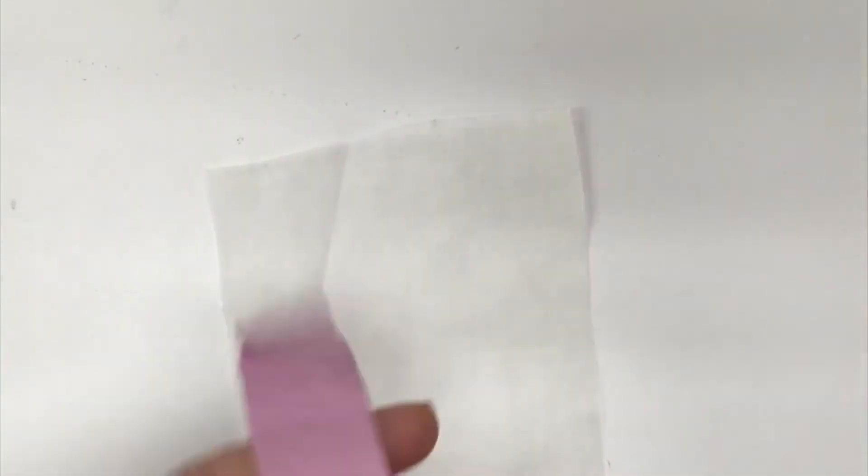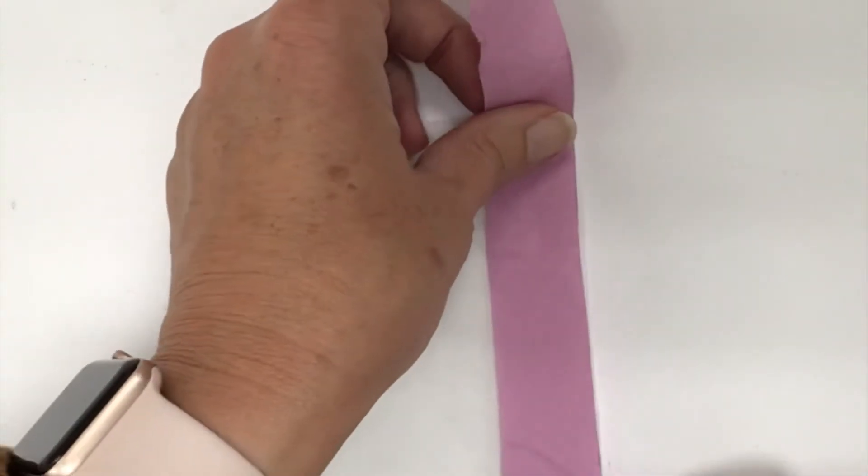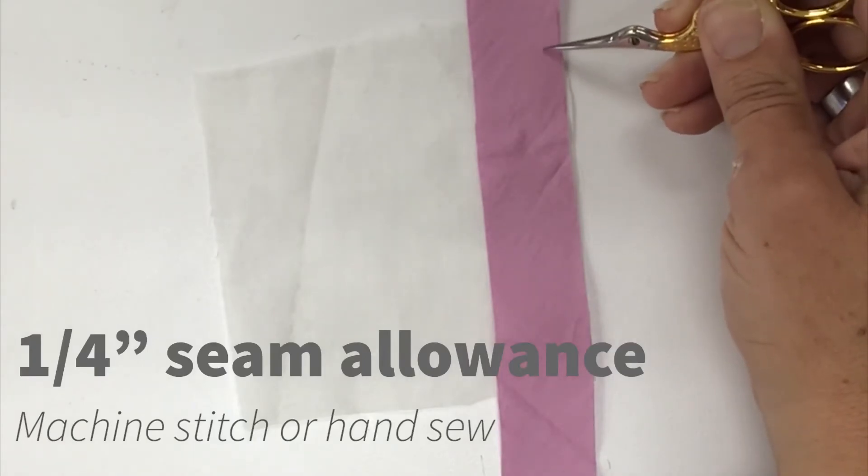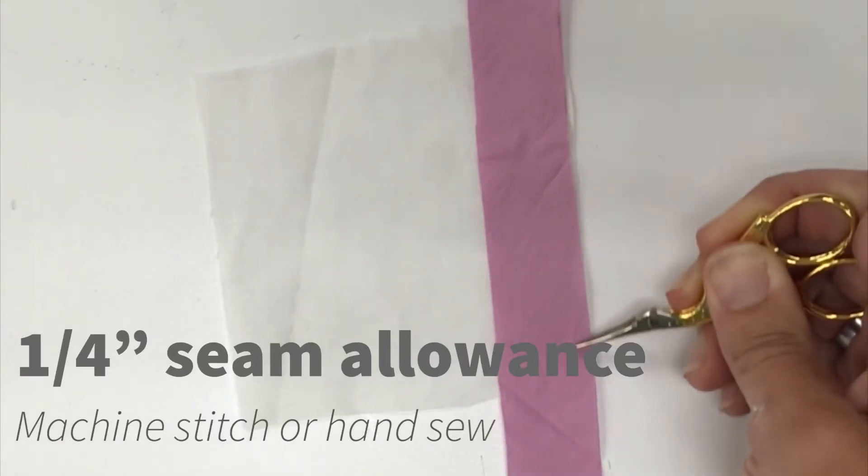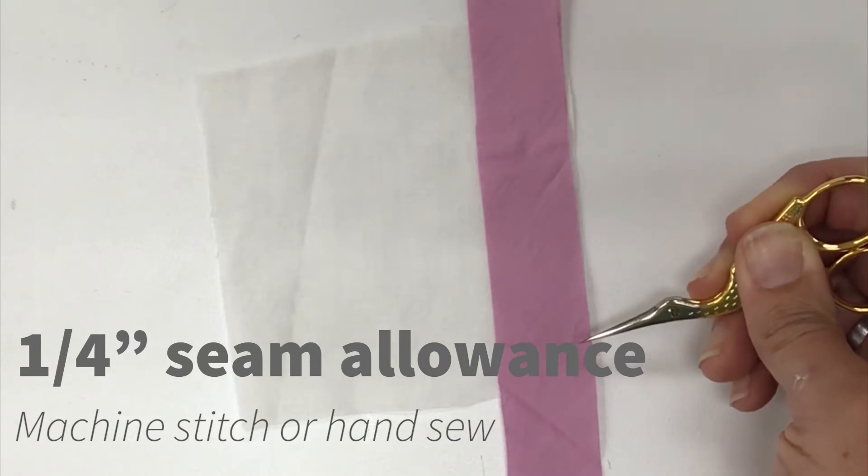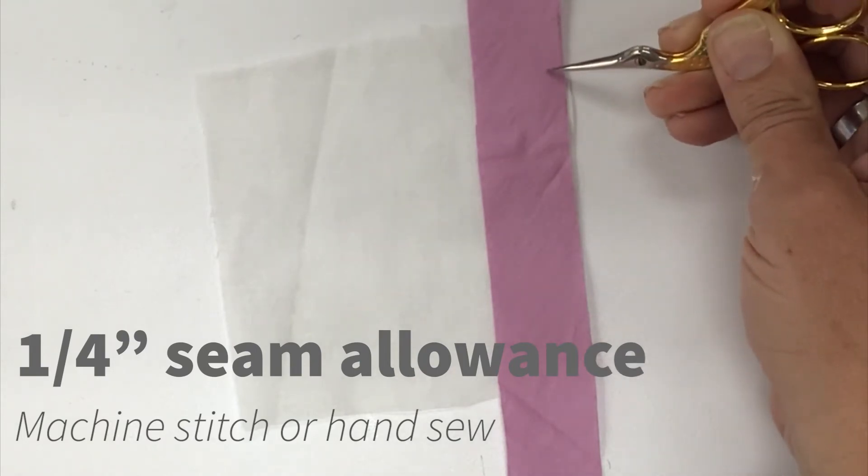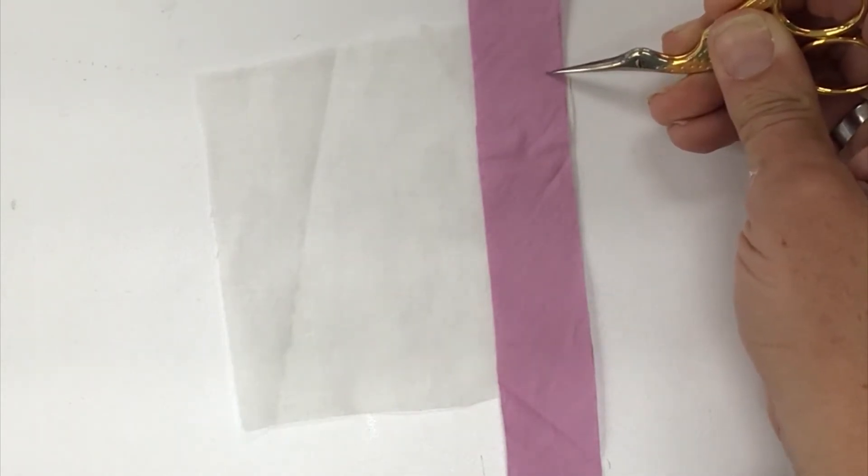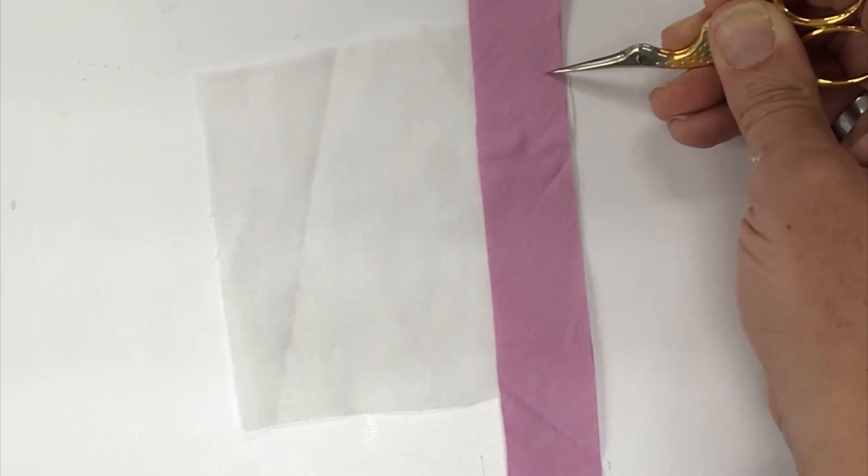The first step is to actually sew your bias tape right sides together to the raw edge of your seam allowance and it recommends sewing a quarter inch. I'll take this to the machine I'm going to sew it one-fourth inch from the edge all the way down and the book says you can do it by hand or by machine but it says one-fourth inch stitch and then it wants you to come in and trim it to one-eighth inch.